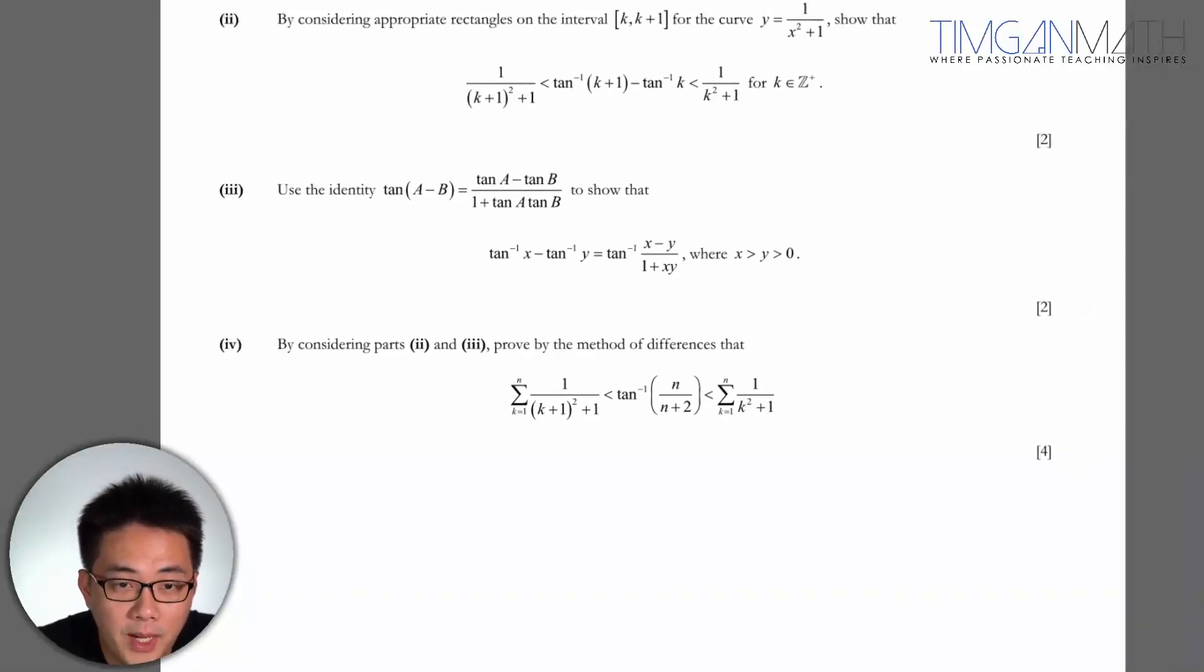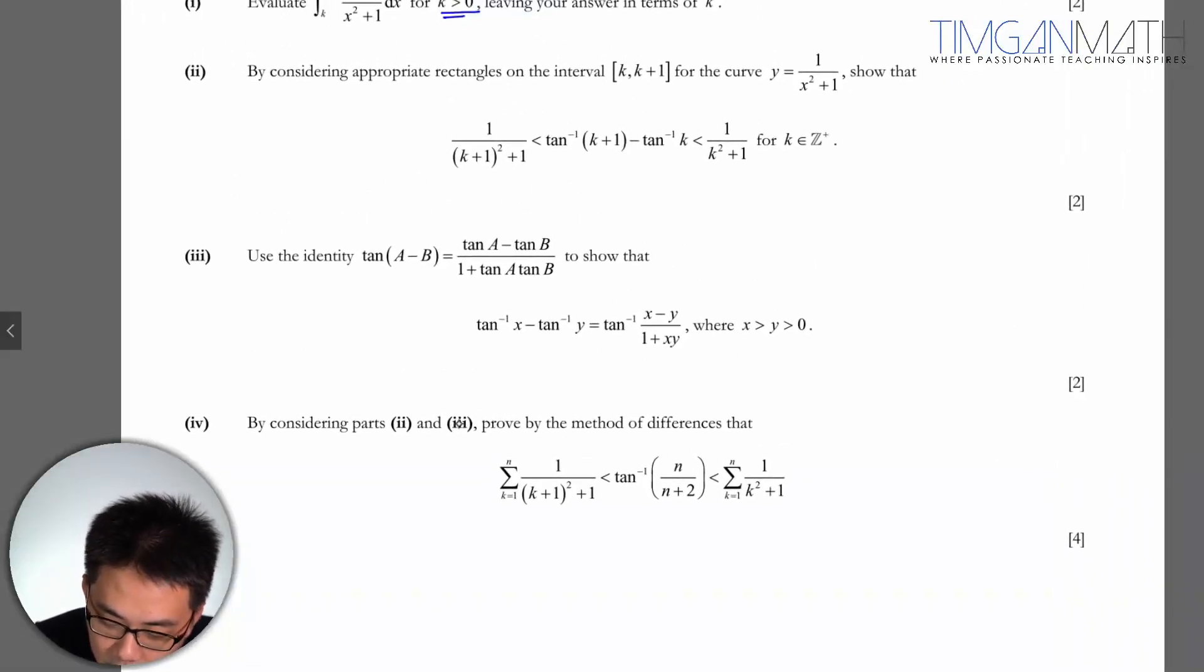Once the third part is done, let's look at the fourth part. You are told to, by considering part two and three, show that this by method of differences exists. So let's look at this part here.